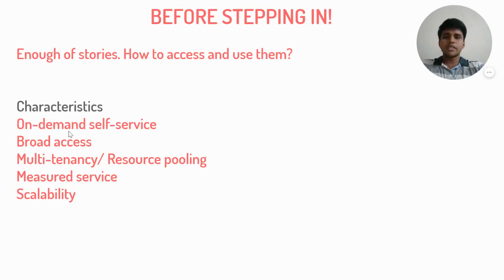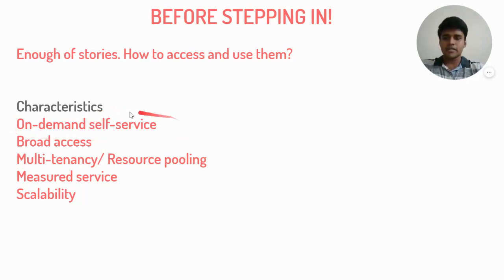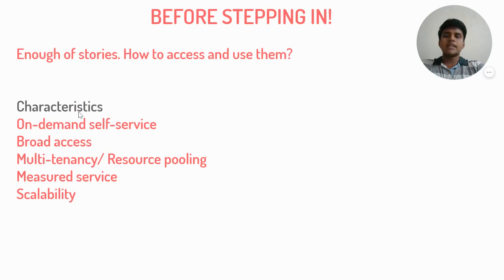Now that we have brushed up the differences between traditional computing and cloud computing, let us look into the characteristics of cloud computing. Taking Gmail as our example again: On-demand self-service means that Gmail can be accessed without the intervention of a service provider. We can log into Gmail using the web application and start using it right away without having to raise a request and get it approved from the service provider.